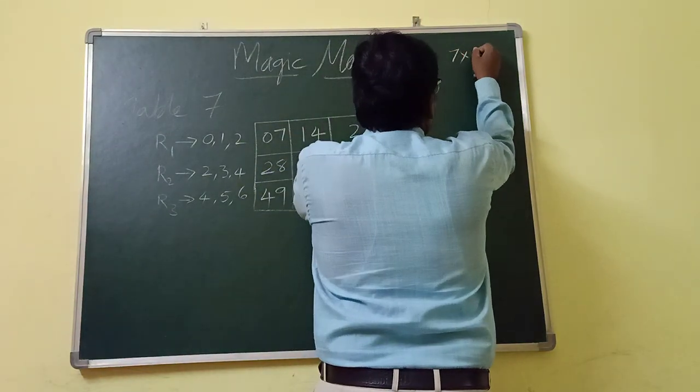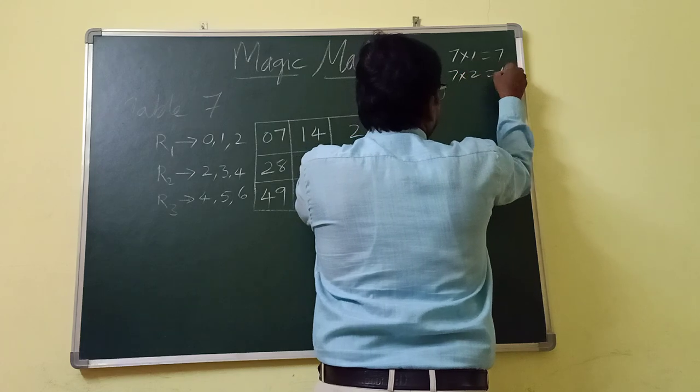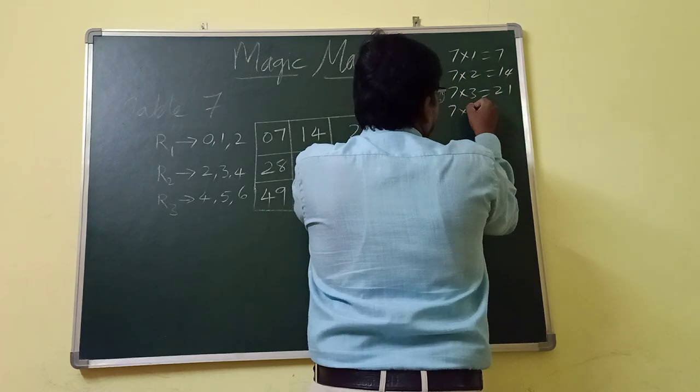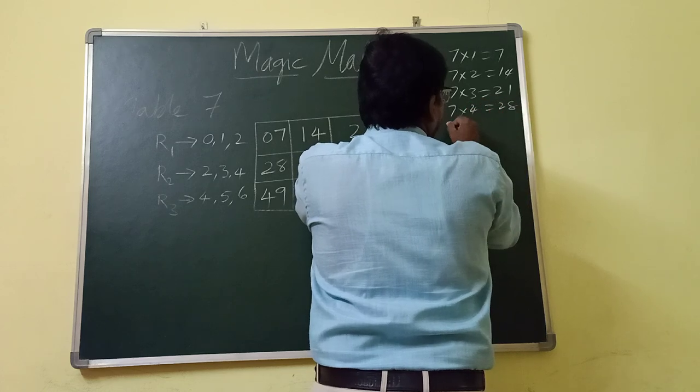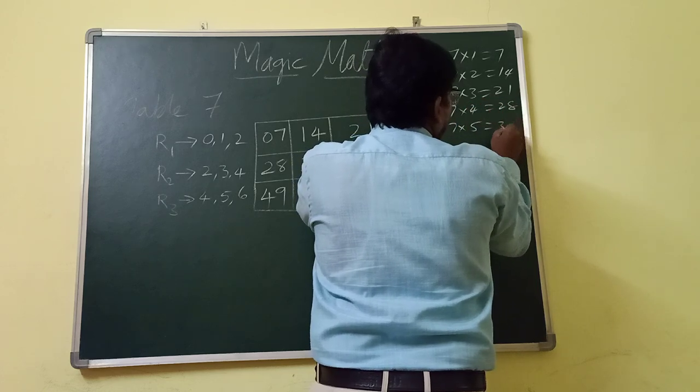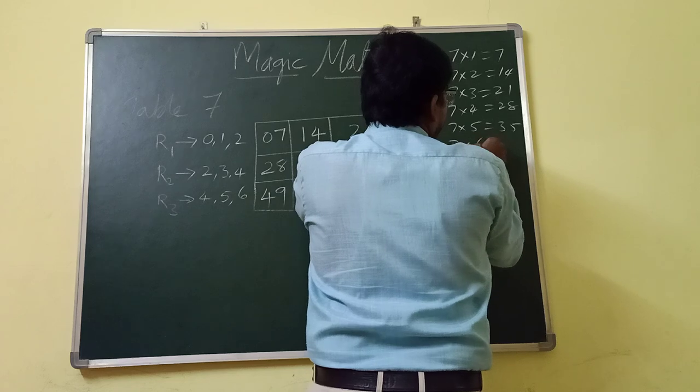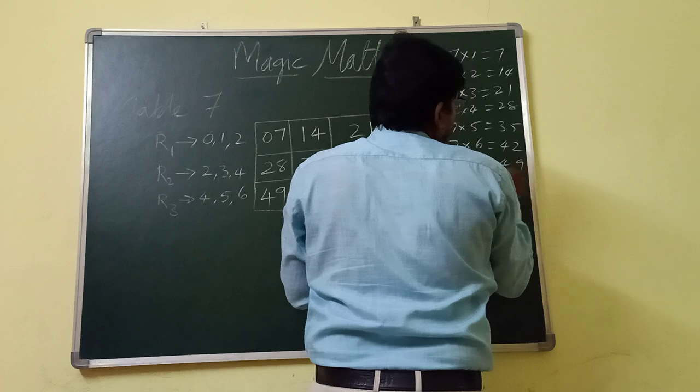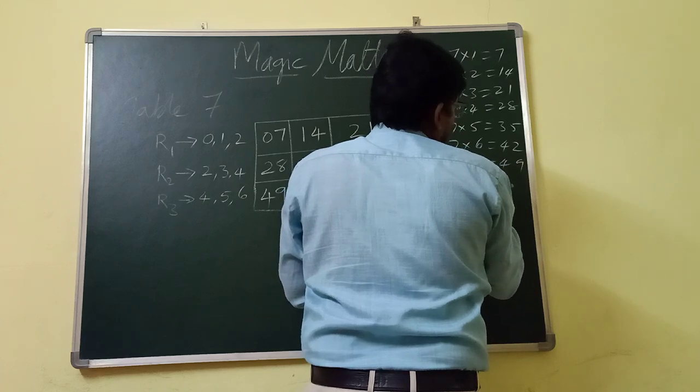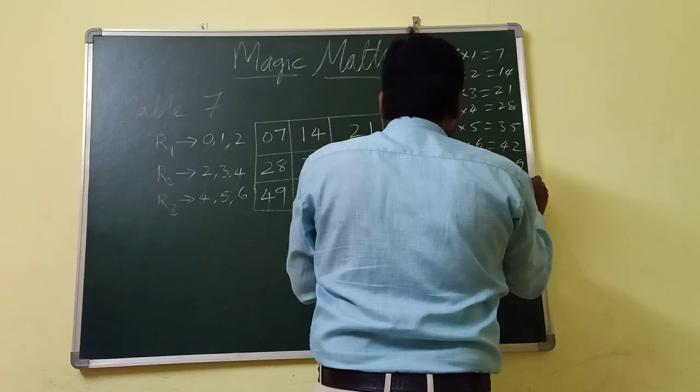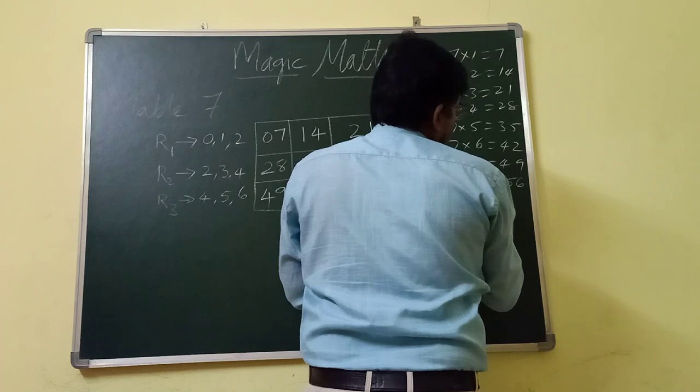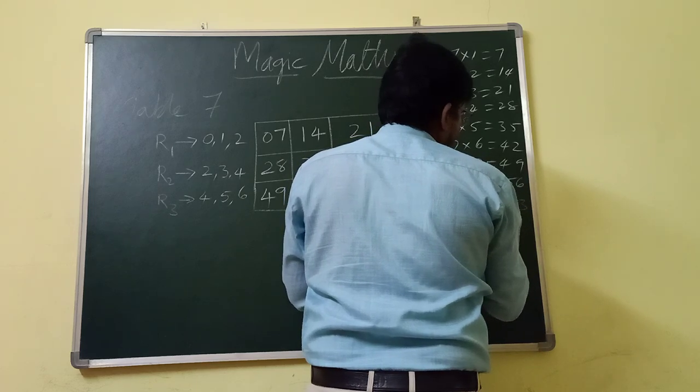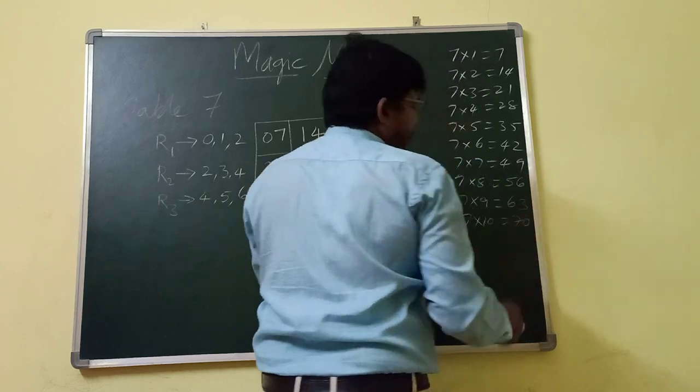7, 1 is 7, 7, 2 times is 14. 7, 3 times is 21. 7, 4 times is 28. 7, 5 is 35. 7, 6 is 42. 7, 7s is 49. 7, 8 is 56. 7, 9s is 63. And now 7, 10 times is 70.